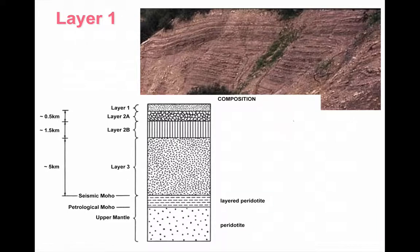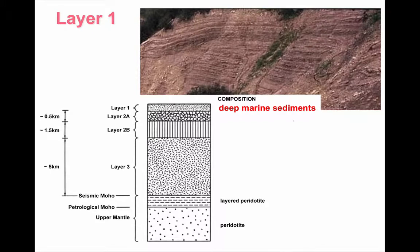The topmost layer, layer 1, as you can see in the photograph, is a series of laminated deep marine sediments, typically black shales. These are obviously going to accumulate over time, so layer 1 will be thicker in older areas of oceanic crust and thinner in oceanic crust that's closer to constructive plate margins.